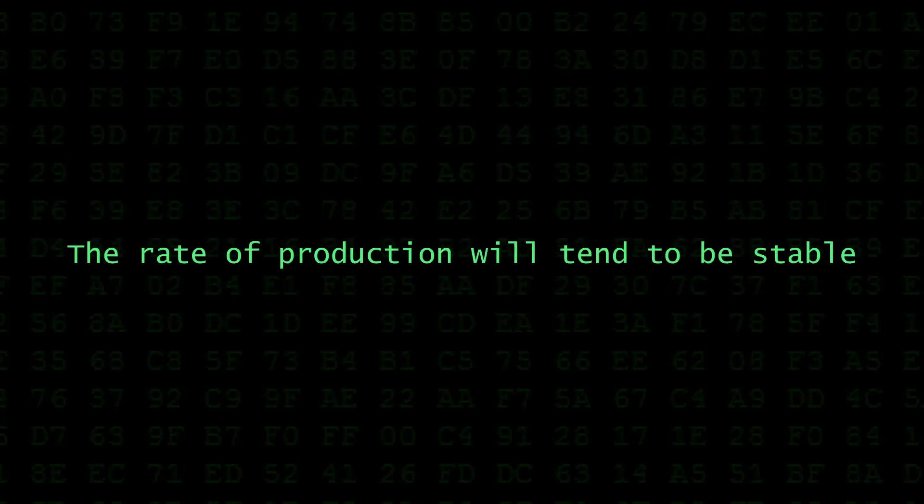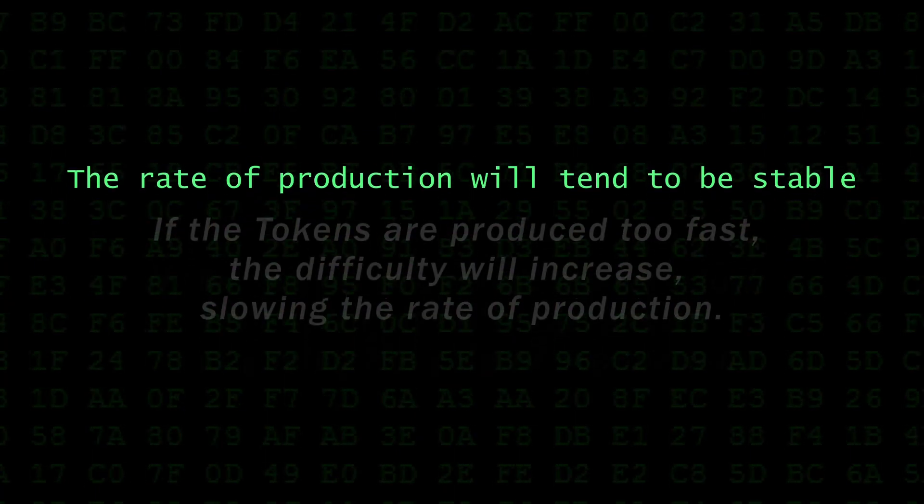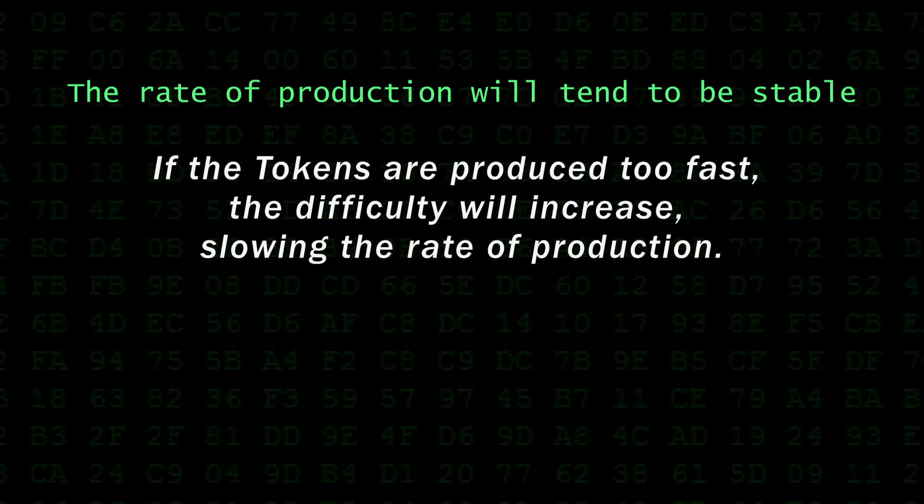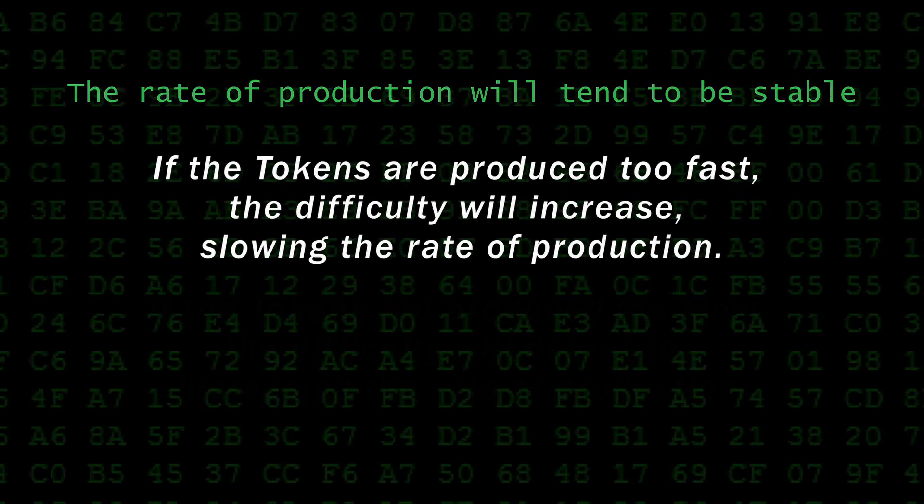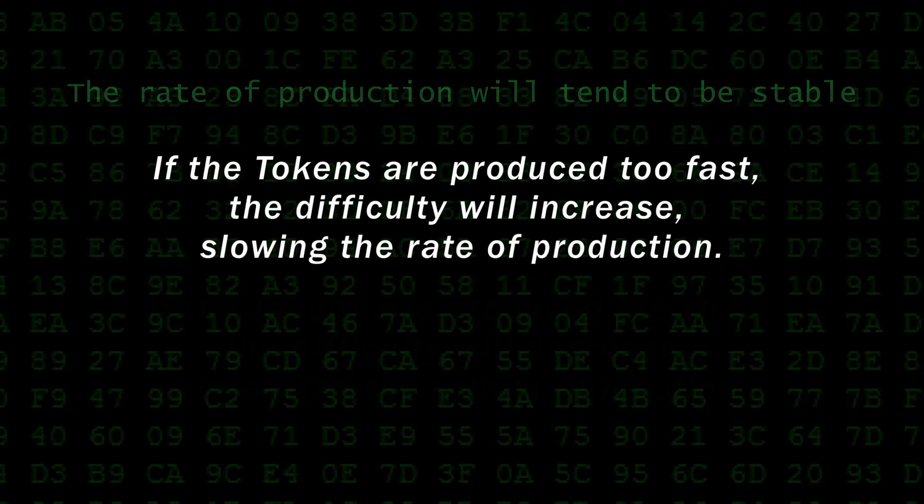The rate of production will tend to be stable over time because if the tokens are produced too fast, the difficulty will increase, slowing the rate of production.